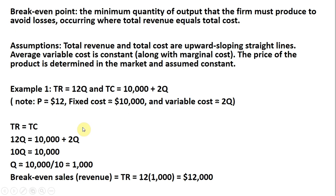To find the break-even point, we're going to set total revenue equal to total cost. After writing out total revenue equal to total cost, and simplifying, we subtract 2Q from both sides, giving us 10Q equals 10,000. 10,000 divided by 10 is 1,000. So the break-even point occurs at 1,000 units of output. If the firm produces less than 1,000 units of output, it would have an economic loss.